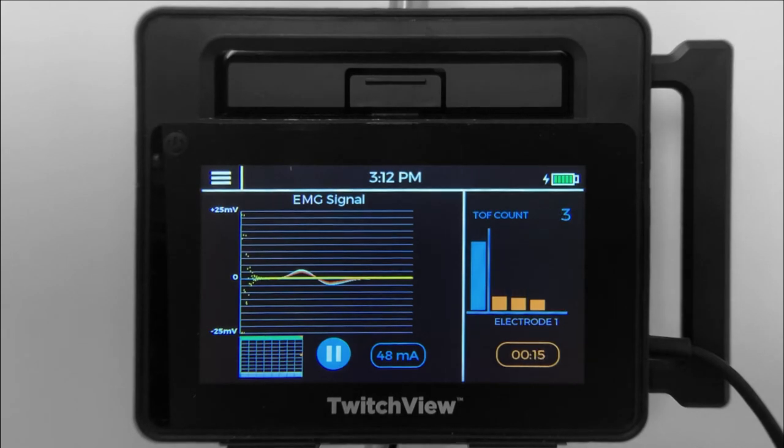Once the fourth twitch disappears, the monitor will measure the TRAIN-4 count. The first time the monitor measures a TRAIN-4 count of zero, it will ask if you'd like to proceed with post-TATANIC count.